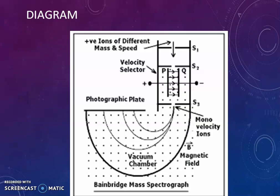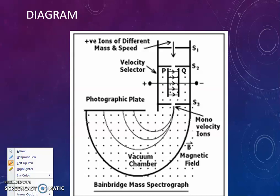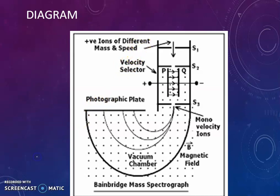Now this is the typical diagram for the study of Bainbridge mass spectrograph. Now here there are positive ions of different mass and speed, and the positive ions enter through the slit S1 and S2.